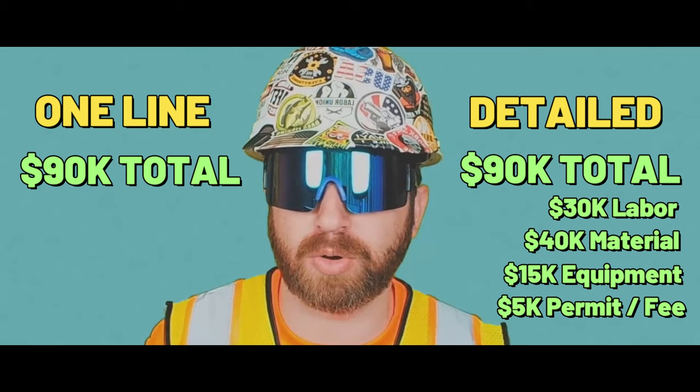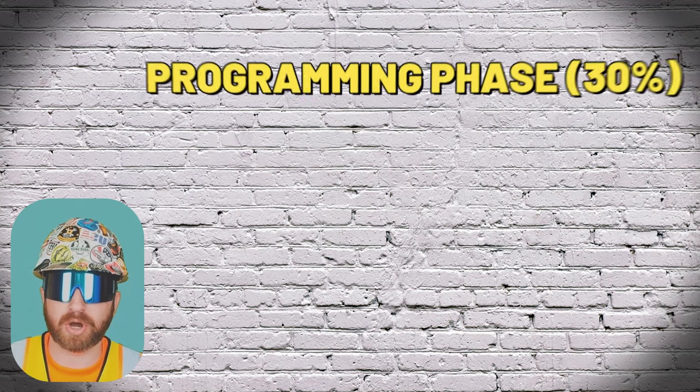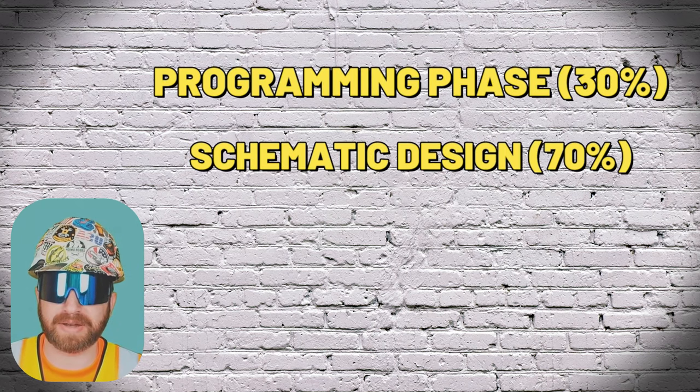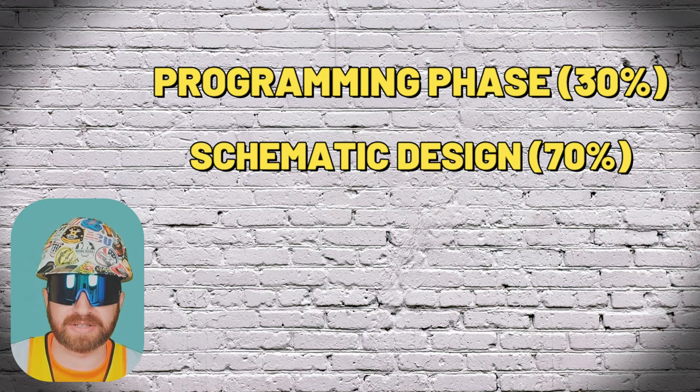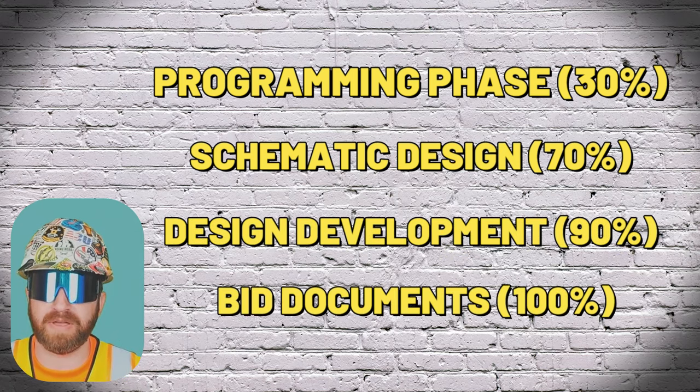Or if multiple line items are required, which would show potential breakout prices such as labor, material, equipment, tax, bond, fee, etc. The owner and design team prepare drawings and specifications working together through a series of phases: starting with the programming phase, then schematic design, then design development, then the bid document phase.